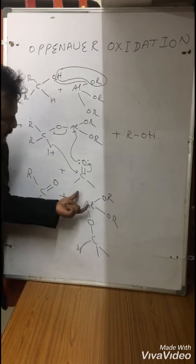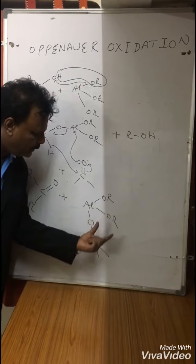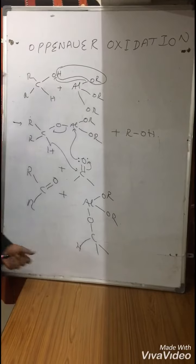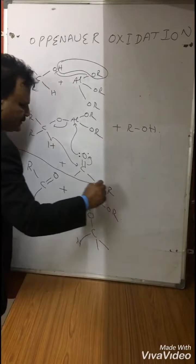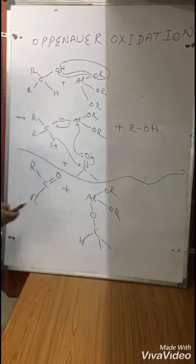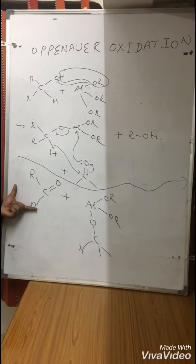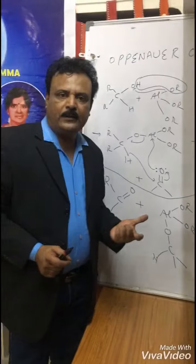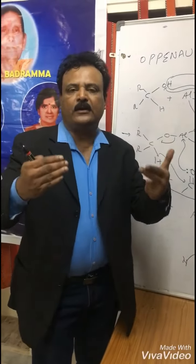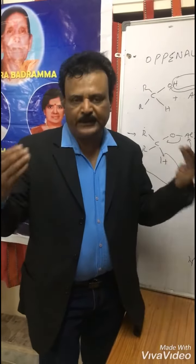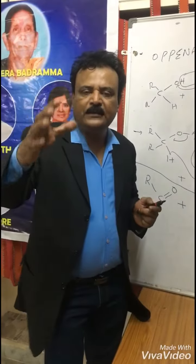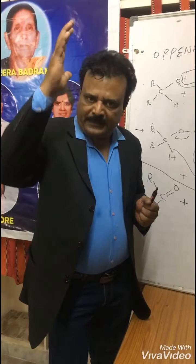That means one OR, another OR, and OCH3. This is the mechanism, and whatever we're going to get from alcohols to ketones, this is Oppenauer oxidation. Secondary alcohols become ketones. This is JRB JK Chemistry for you.